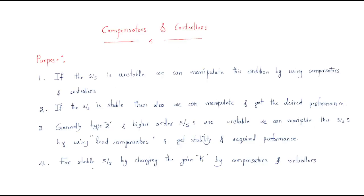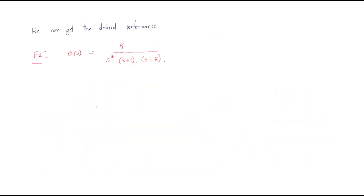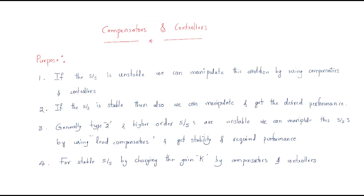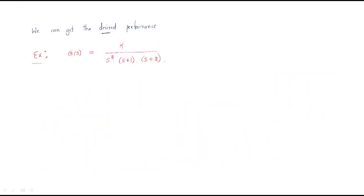For a stable system, by changing the gain K using compensators and controllers, we can get the desired performance. Every system has a DC gain, and by changing this DC gain we can obtain the required output performance.